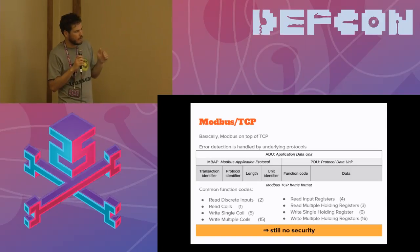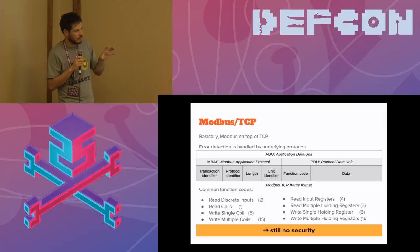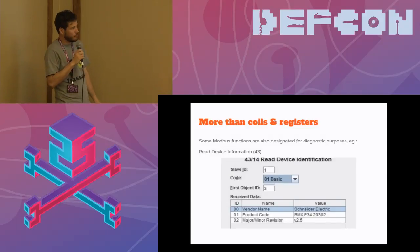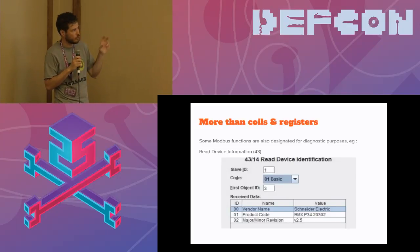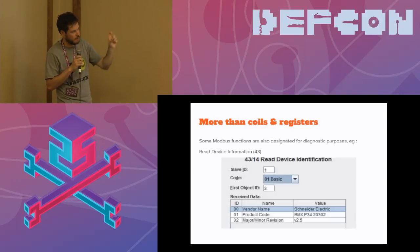Modbus is mostly used to perform read and write actions. The most common function codes are used to read coils — one byte — or registers — eight bytes. When Modbus was transferred to TCP, no security was added, so still no encryption or authentication. You can also perform basic diagnostic functions, like the 'read device information' request. Here's a screenshot of that request sent to a Schneider M340 PLC. As you can see, we can determine that it's a Schneider Electric PLC and get detailed hardware information: BMX P34.